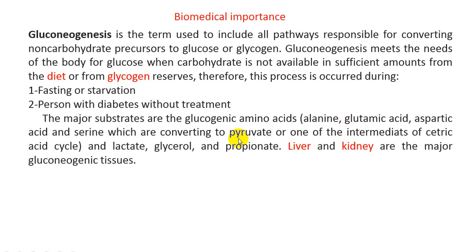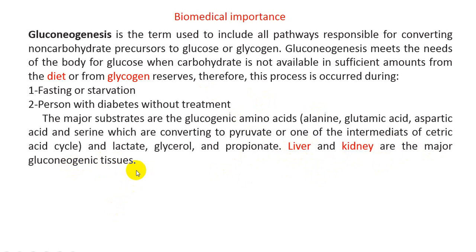Glucogenic amino acids are converted to pyruvate or one of the intermediates of the citric acid cycle. Second is lactate. Third is glycerol, and propionate — though propionate is outside the scope of this lecture. So amino acids, lactate, glycerol, and propionate are all considered substrates for gluconeogenesis to be converted to glucose.